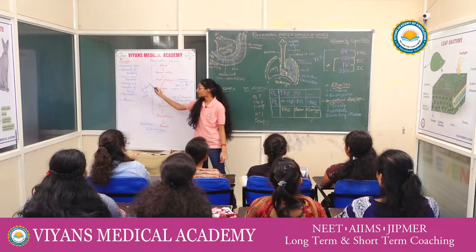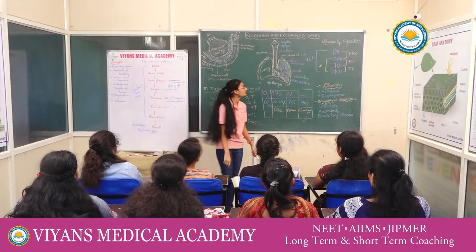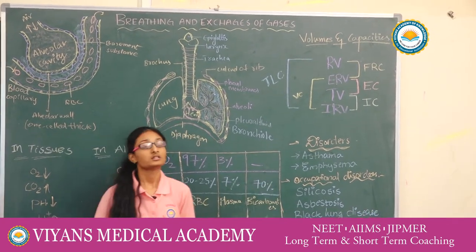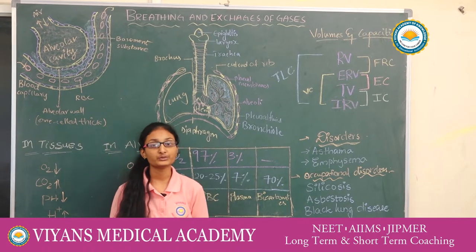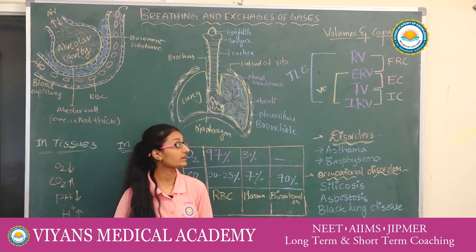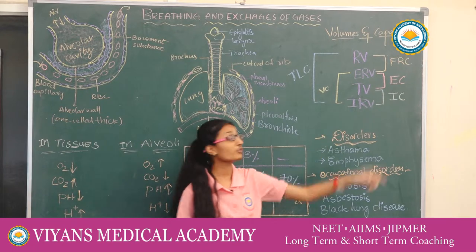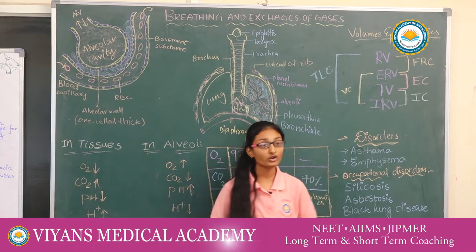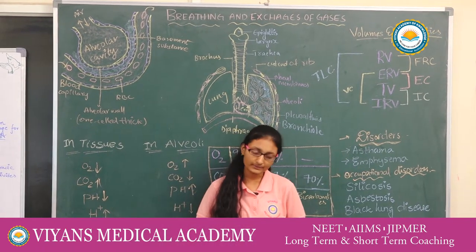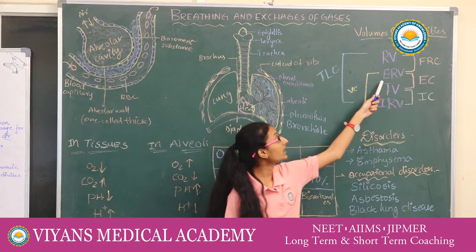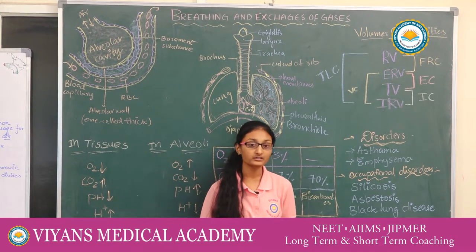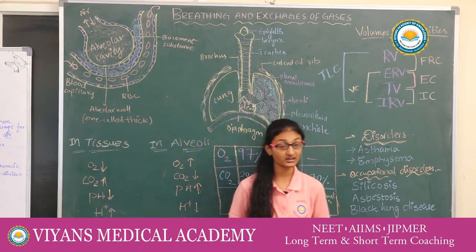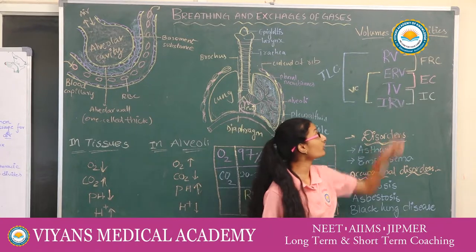A very important topic from this chapter is volumes and capacities. First, residual volume (RV): the total volume of air remaining in the lungs after forcible expiration. Tidal volume (TV): the volume of air inspired or expired during normal breathing. Inspiratory reserve volume (IRV): the volume of air inspired during forcible inspiration. Expiratory reserve volume (ERV): the volume of air expired during forcible expiration.